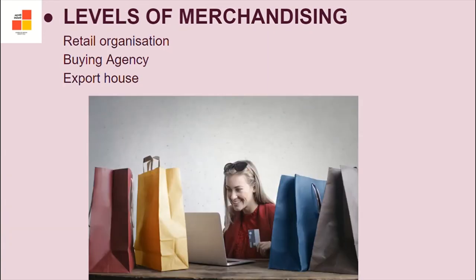Levels of merchandising: First, retail organization merchandising — it moves fashion from the designer's showroom to the retail floor and into the hands of consumers. Second, buying agency merchandising — this means identification of vendors, negotiating cost, and checking quality, which is the responsibility of the buying agent. Third, export house merchandising — this offers retail goods for sale in foreign consumer markets.